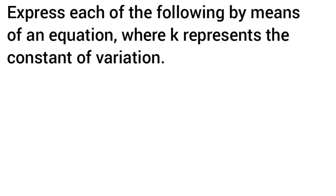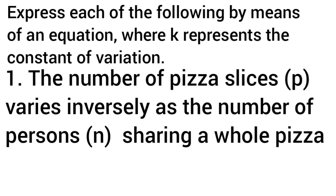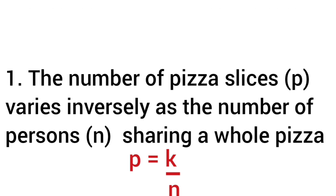Express each of the following by means of an equation, where k represents the constant of variation. Number one: the number of pizza slices p varies inversely as the number of persons n sharing a whole pizza. So we write it mathematically as p equals k over n, where k is the constant of variation and n is the number of persons sharing a whole pizza.